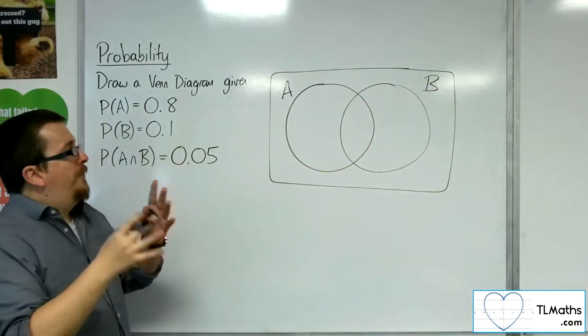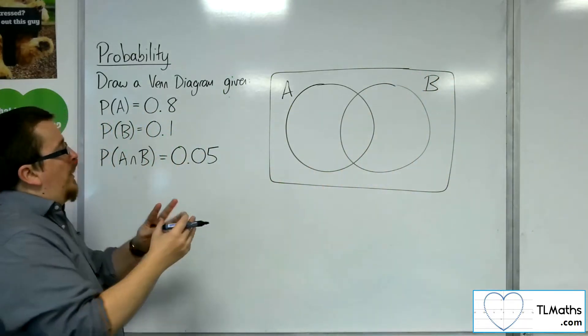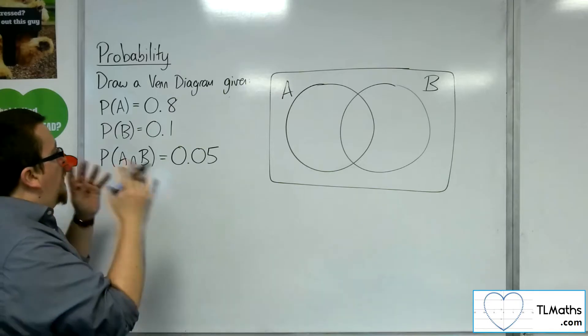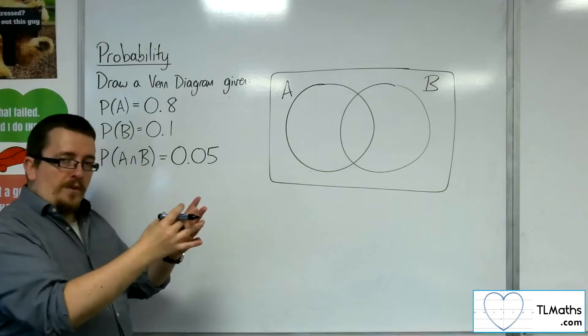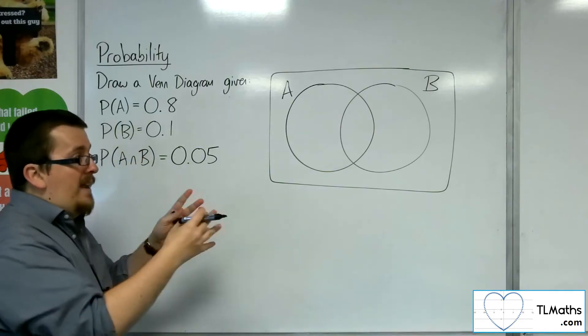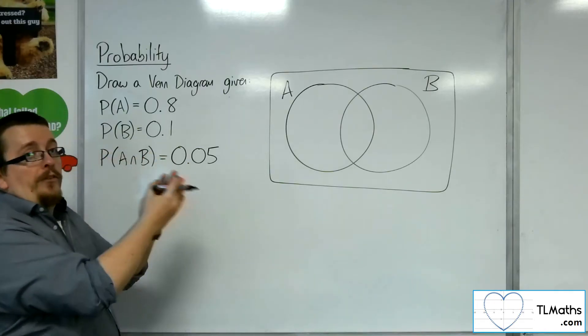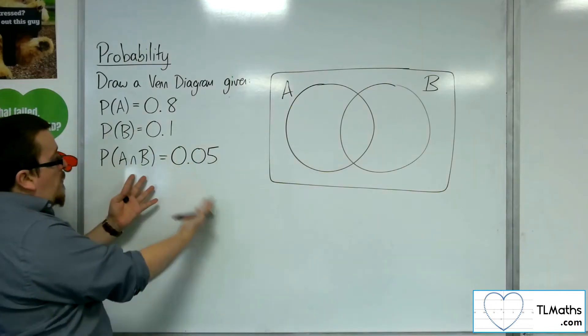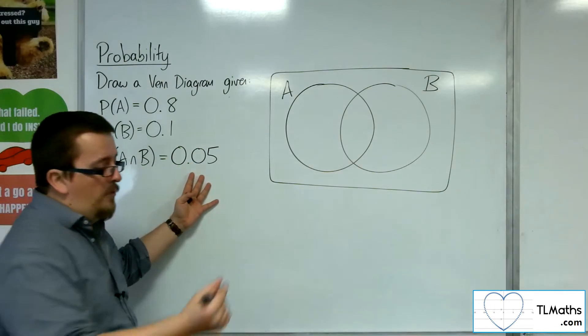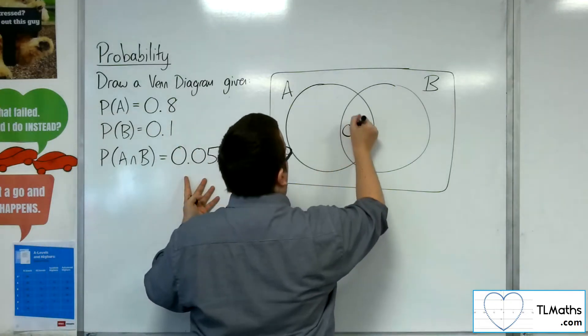What you want to do from there is, with a Venn diagram, you always want to look to see if you've been given the intersection, because what you want to do to fill it in is work from the inside and work outwards. So you want to start with that intersection, the 0.05. That's the bit that's going to go in the middle.